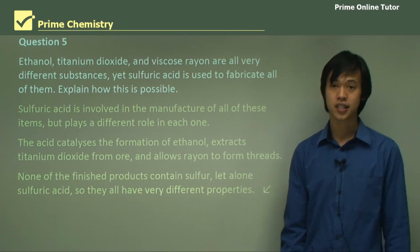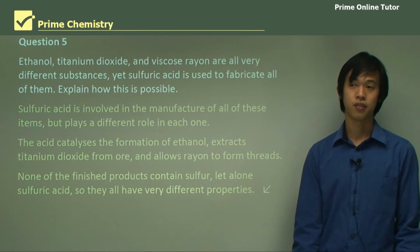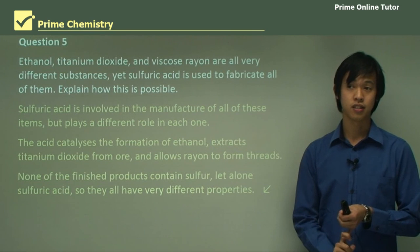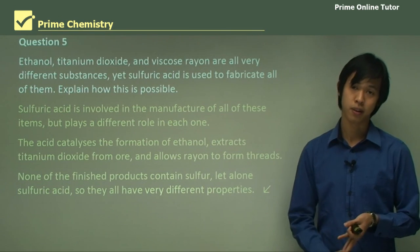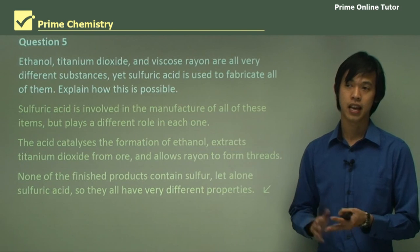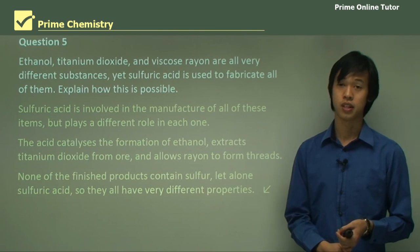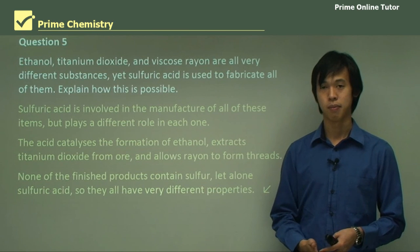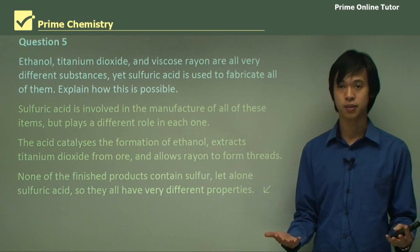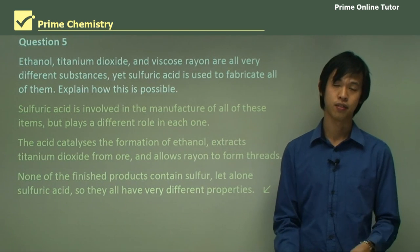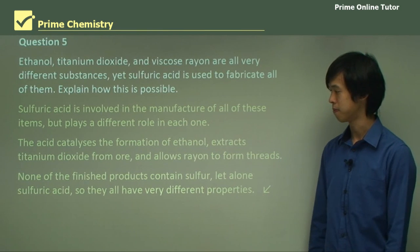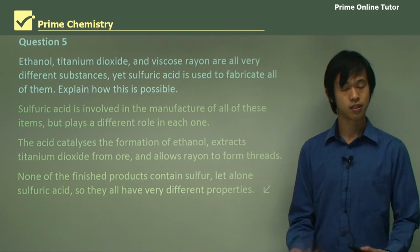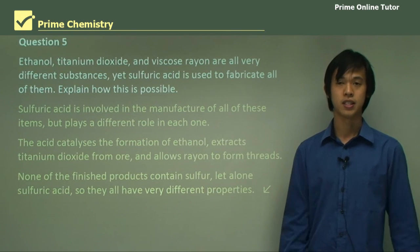That wraps up today's lesson on the industrial uses of sulfuric acid. We've looked at what sulfuric acid is used for — particularly lead acid cells, fabrics, fertilizers, and the production of ethanol. A lot of these you should have seen before in earlier parts of the course, so hopefully this was a good refresher. In the next few lessons, we'll talk more about how to deal with sulfuric acid, and I look forward to seeing you at our next lesson.